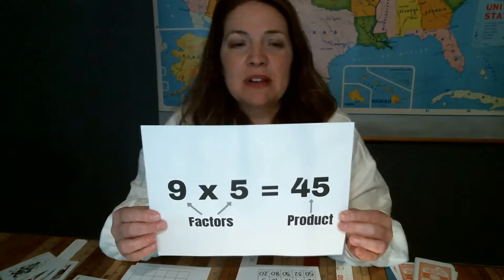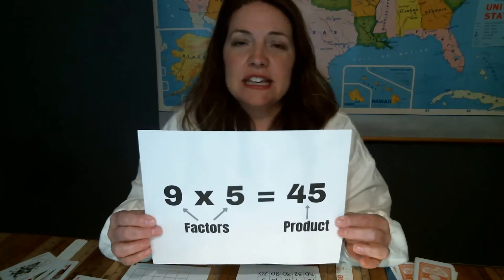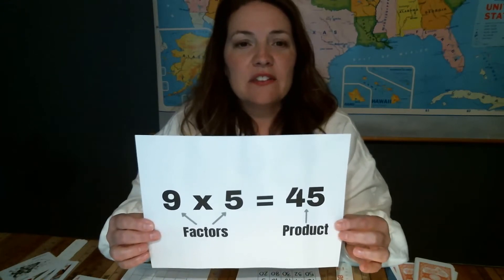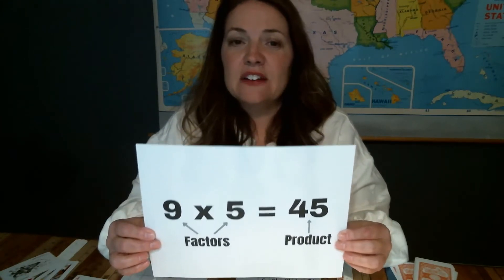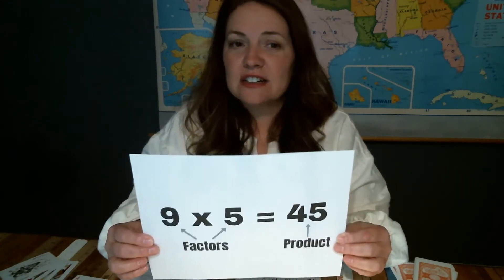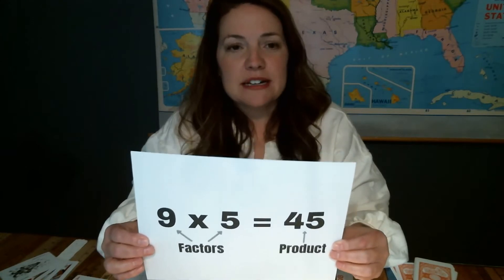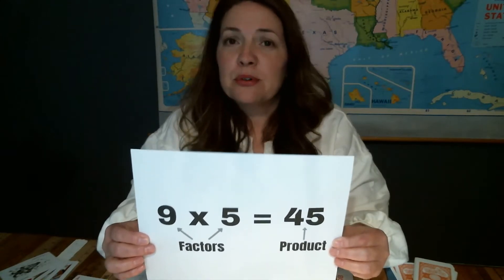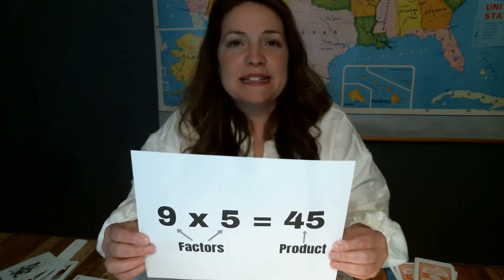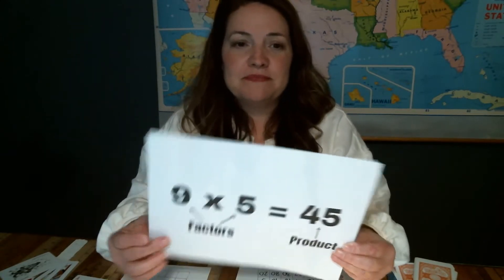Today we're going to make our own factor bingo game. Factors are numbers you can multiply together to get another number. For example, 9 multiplied by 5 equals 45. In this instance, 9 and 5 are the factors and 45 is the product. The term product just means the answer to a multiplication problem.